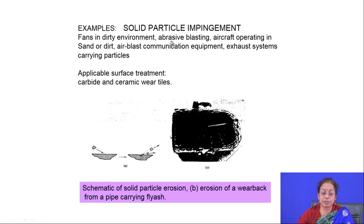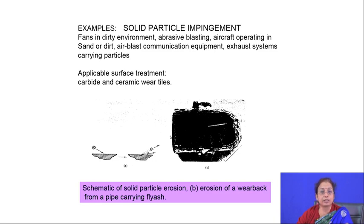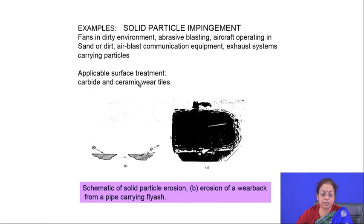When large numbers of particles impinge on the surface, the accumulated energy causes deformation, subsurface failure, and loss of material from the surface. The characteristic feature of solid particle impingement is the presence of small pits and holes on the surface, depending on velocity, mass, and size of the particles. Erosion of a pipe carrying fly ash, for example, shows pits and holes on the surface. Applicable surface treatment involves applying a very thin hard layer by hard-facing, physical vapor deposition, or chemical vapor deposition to minimize solid particle impingement.